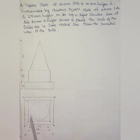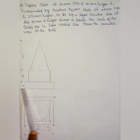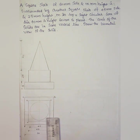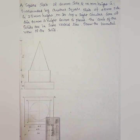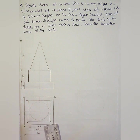The first square slab dimensions are 60mm side and 15mm height. The second square slab is 45mm side and 25mm height. On top, the cone has 40mm diameter and 60mm height. We will draw the isometric view of this combination of solids.